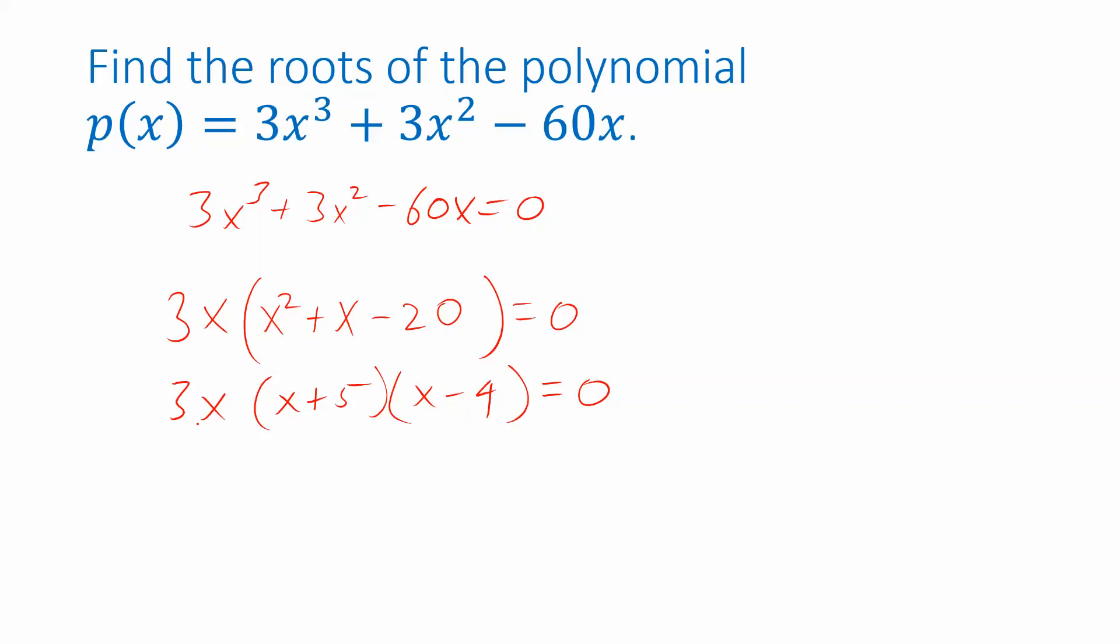Now, I've completely factored my equation, I have three things that are multiplying together, the result of which is zero. So again, if their product is zero, one of them has to be zero. Either 3x is zero, or x plus 5 is zero, or x minus 4 is zero. So if we isolate x here, in the first equation, I get zero. And the second one, I get negative 5. And in the last one, I get positive 4. And those are the roots.